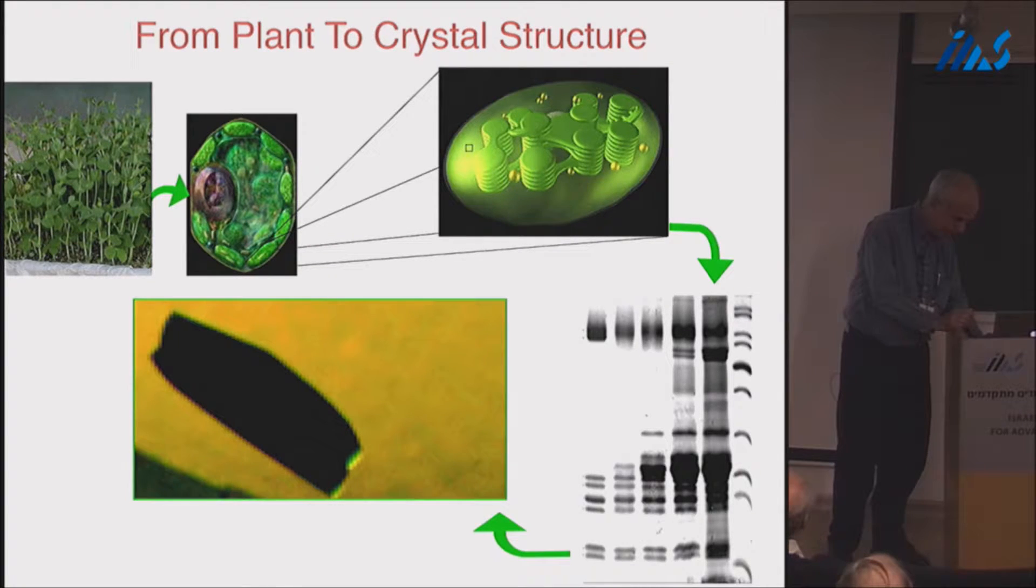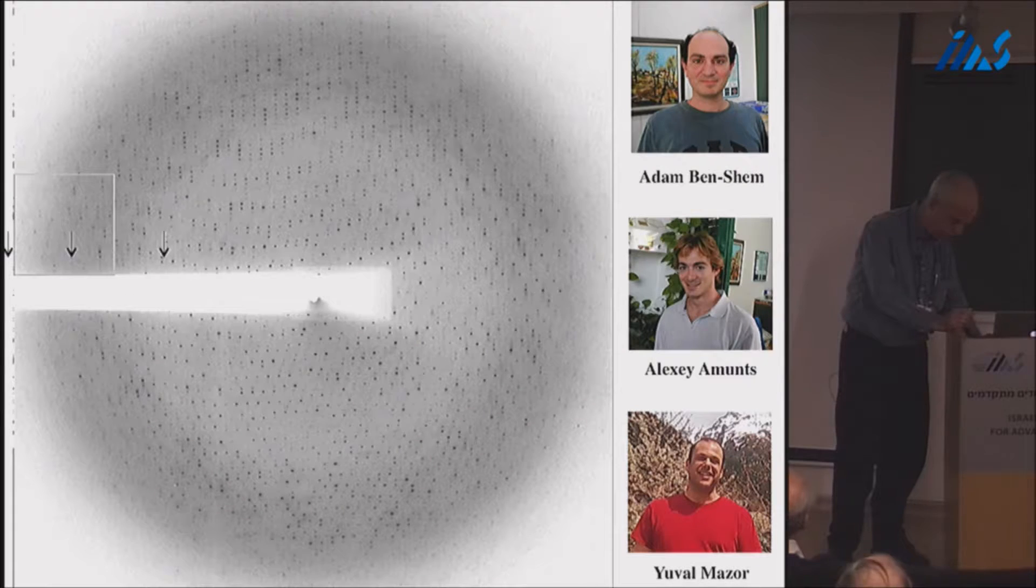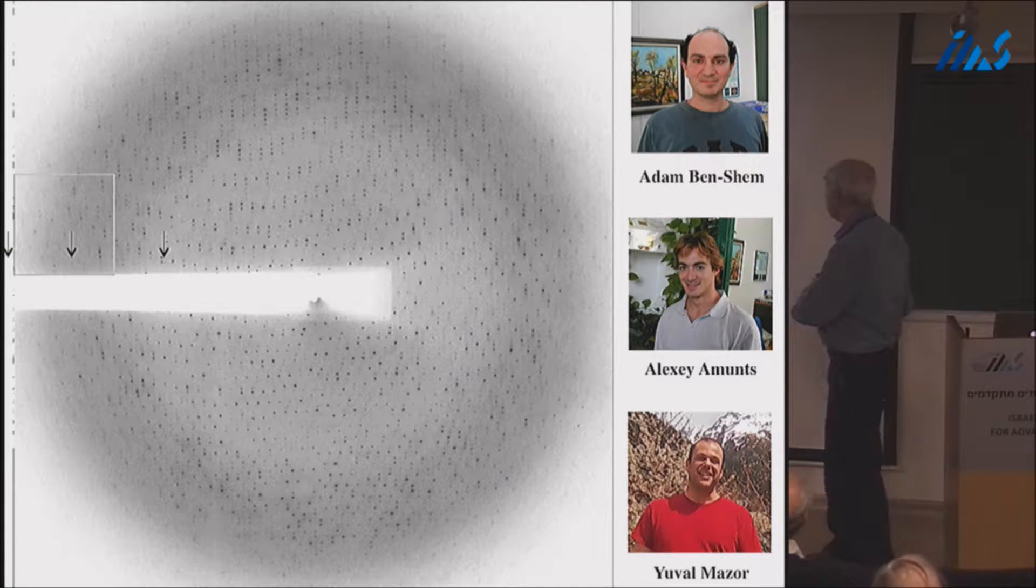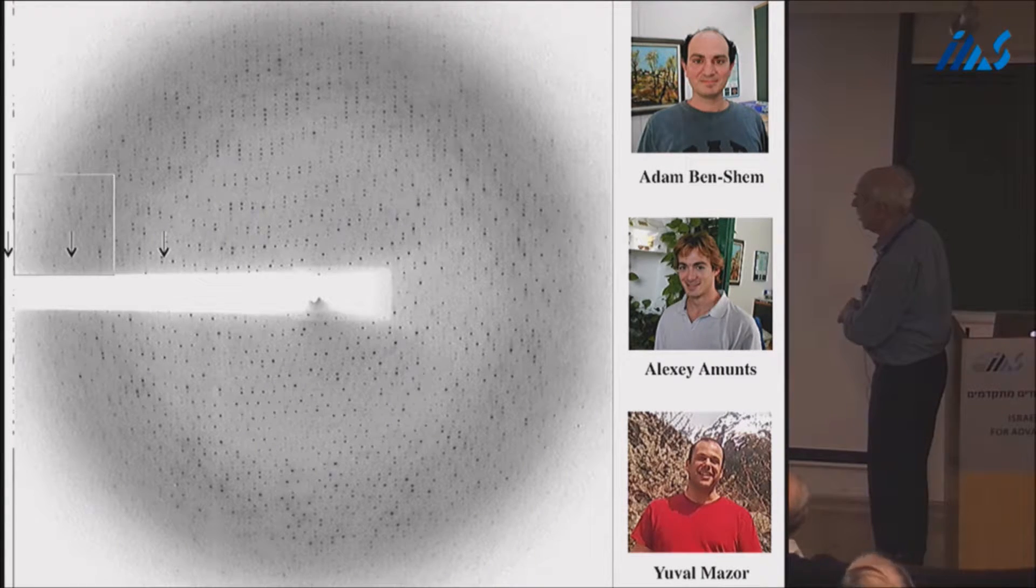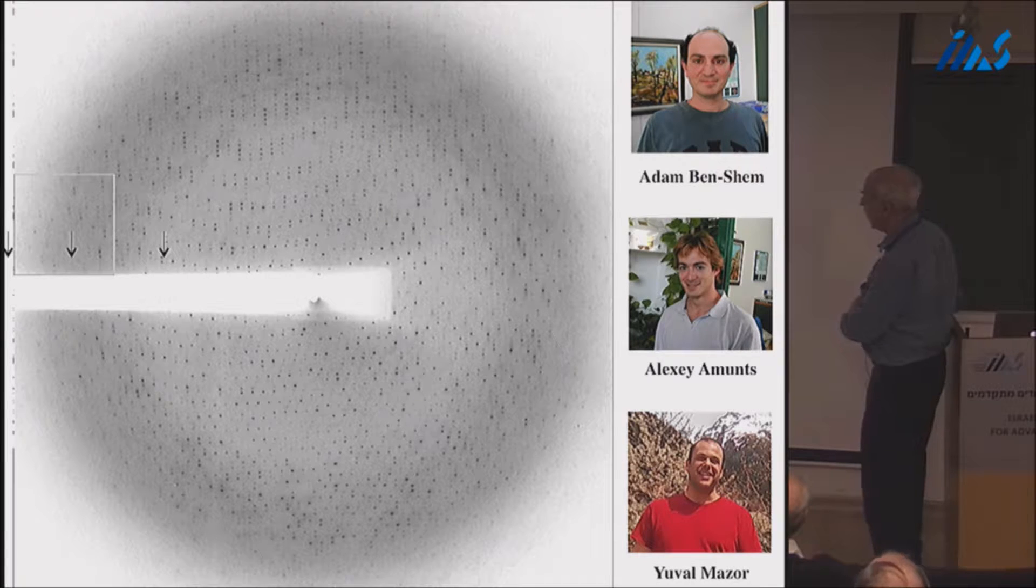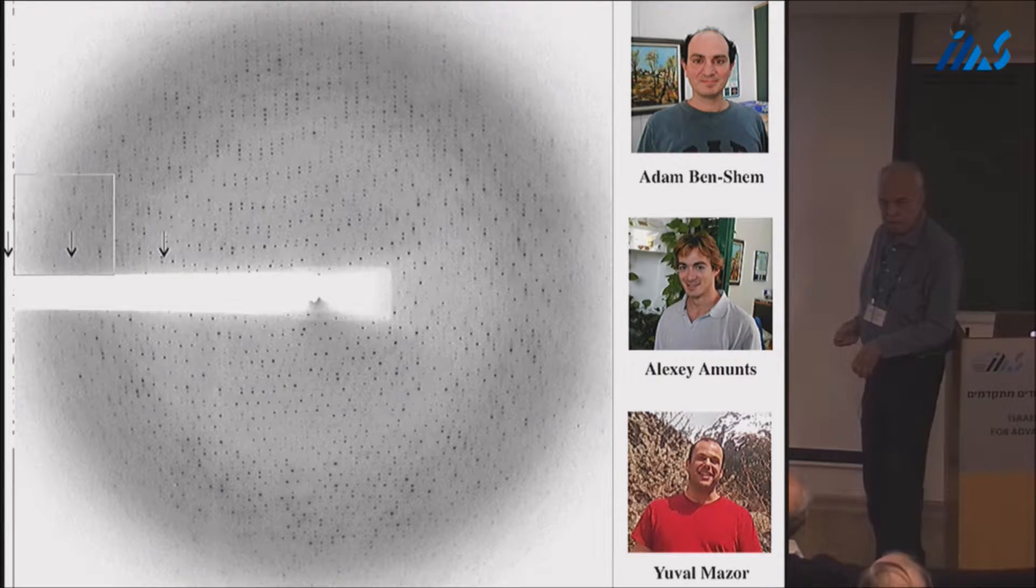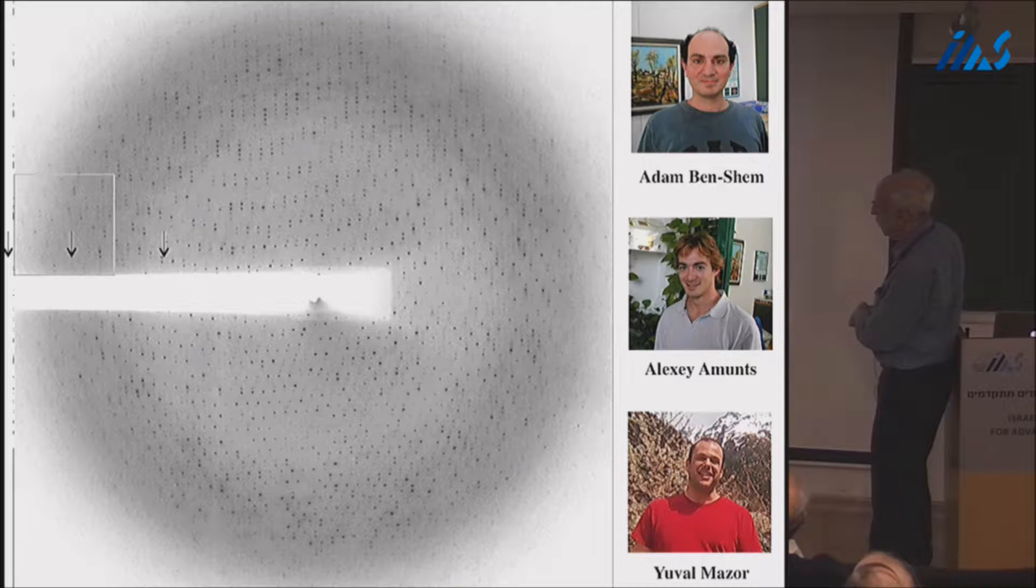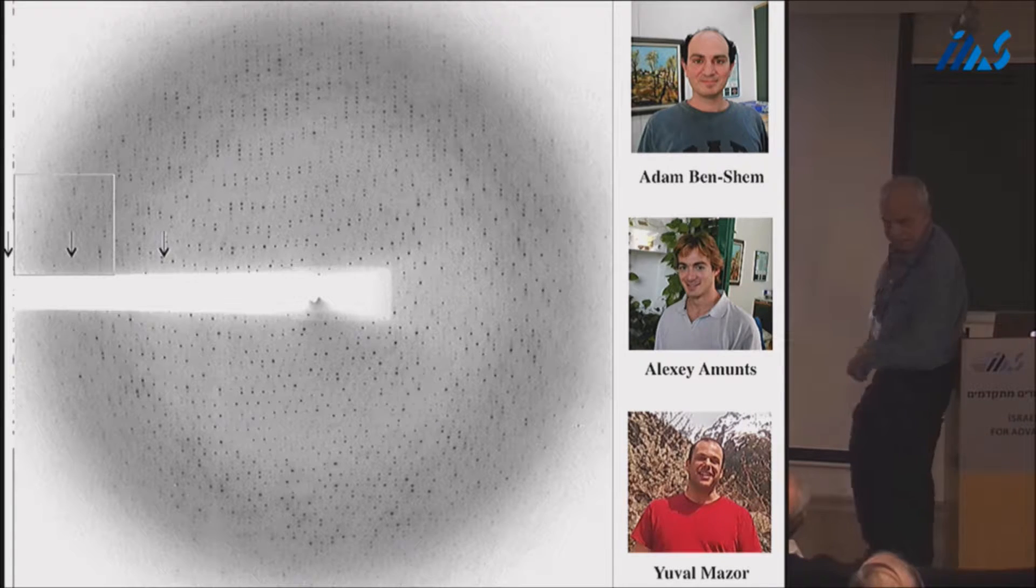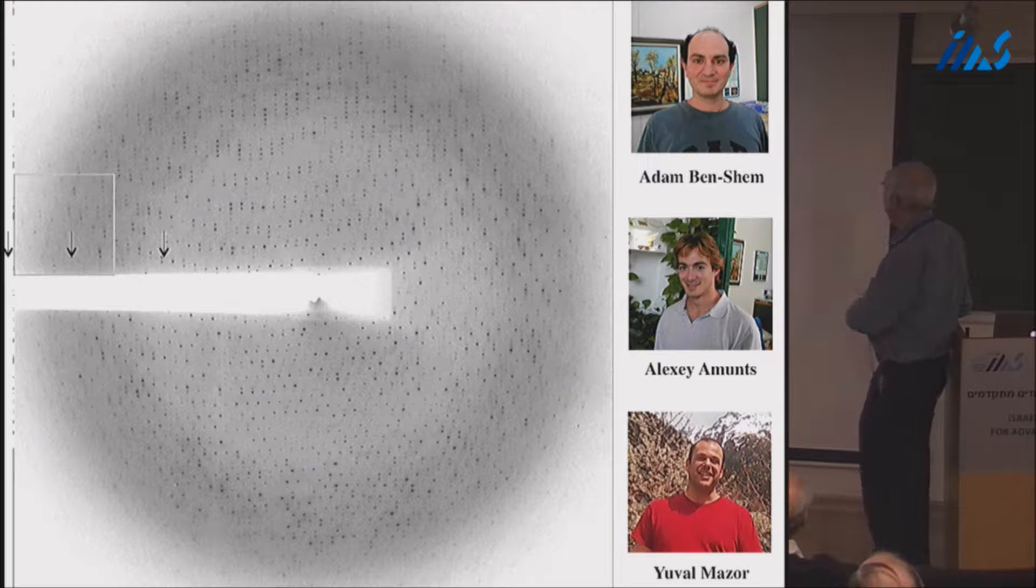This is structural biology for you. Four years later, he is half a year before finishing his PhD, he has no single experiment to present. Nothing. So I told him, look, I am doing molecular biology. Let's clone something, do this, and half a year you get PhD, no problem. He said, no, if I cannot solve plant photosystem I, it means that I don't deserve to be a PhD. And he did it with the help of a very good crystallographer Felix Frolov.